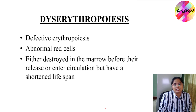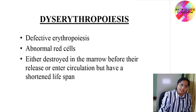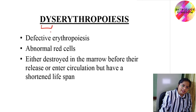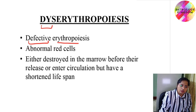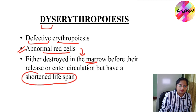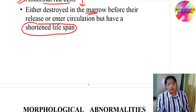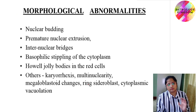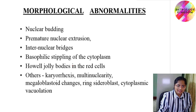Now, what is dyserythropoiesis? As the name suggests, it is defective erythropoiesis, which leads to the formation of abnormal red cells. These abnormal red cells are either destroyed in the marrow before their release, or they enter circulation but have a shortened lifespan.